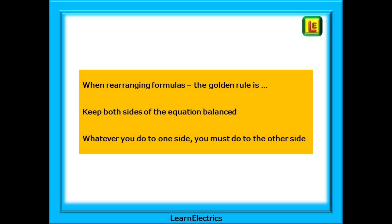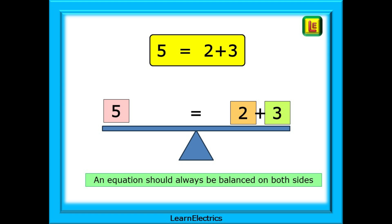Let's look at this. When rearranging formulas, the golden rule is: keep both sides of the equation balanced. Whatever you do to one side, you must do to the other side. Take this equation: 5 equals 2 plus 3. I like to imagine a seesaw, or balanced beam, as shown. If both sides are the same, then the seesaw — the beam — will be balanced. An equation should always be balanced on both sides.